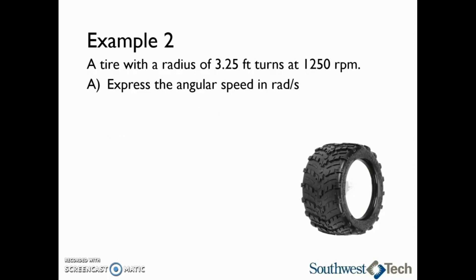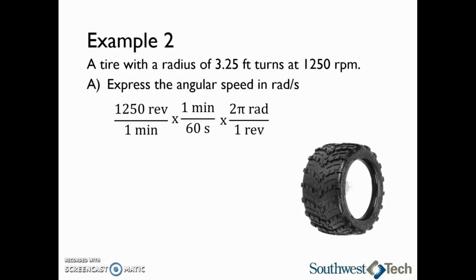In the first part, we need to express the angular speed in radians per second, so that we can use the equation linear velocity equals angular speed times the radius, since the angular speed must be in radians per second. We will take the given angular speed, 1250 revolutions per one minute, then multiply by the conversion factor that one minute equals 60 seconds, and then multiply by the conversion factor that two pi radians equals one revolution. This cancels off the units of revolutions, leaving us with radians per second. Multiplying, the angular speed is 105 radians per second.